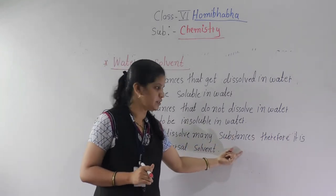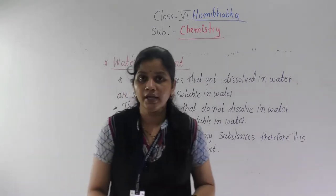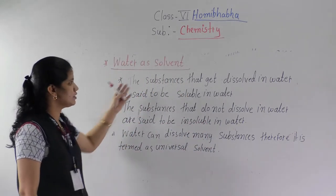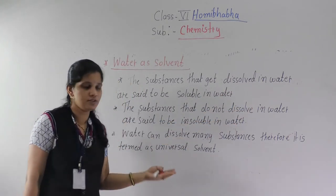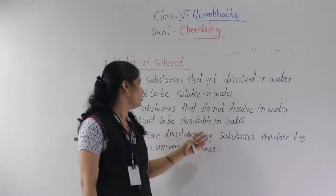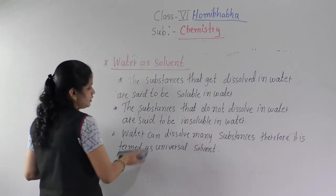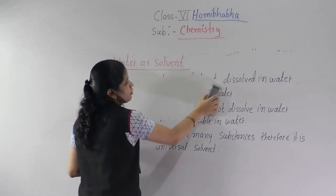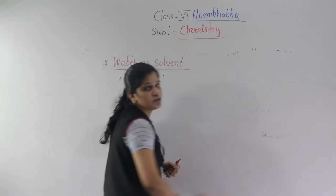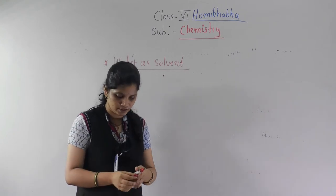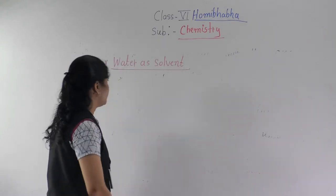Water can dissolve many substances, therefore it is termed as a universal solvent. To summarize: substances that dissolve in water are known as soluble substances; substances that do not dissolve in water are said to be insoluble. Water is known as a universal solvent because many substances are dissolved in it.